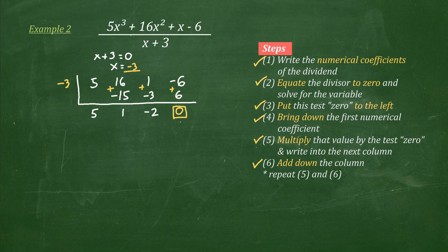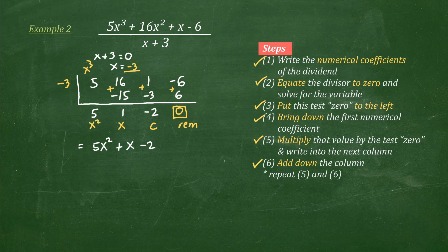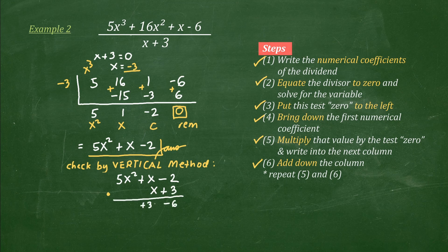Now, this is important again, because as you can see, our remainder is 0, meaning the result is exact — there's no extra value. Now, what do these numbers mean again? Take note that the degree of our dividend is 3, so this is x cubed. Therefore, the degree of our answer should be 1 less, so this should be x squared. Then, descending order of degree, this will be our x. And then this will be our constant. Therefore, the final answer is 5x squared plus x minus 2. So this is our answer. Of course, this answer can be checked by multiplying using the vertical method, as quickly shown here. Our final answer must be correct.